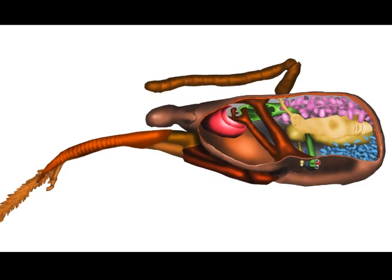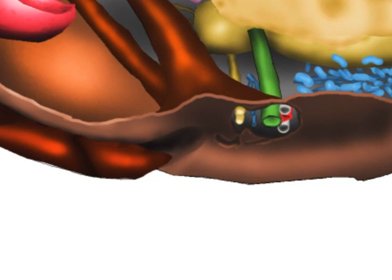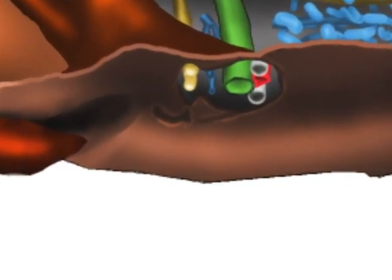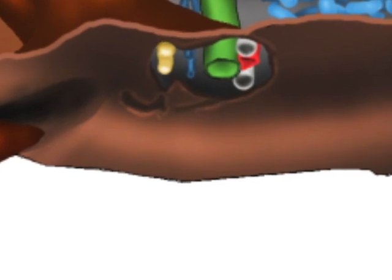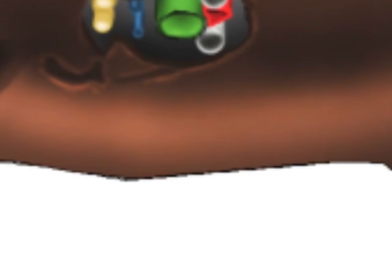large tracheal trunks bringing air to the head organs, the oesophagus passing down towards the intestinal system, the ducts of the saliva glands from the thorax, and the ventral nerve cord, part of the chain of central nervous system ganglia, which run along the ventral side of the bee's body.